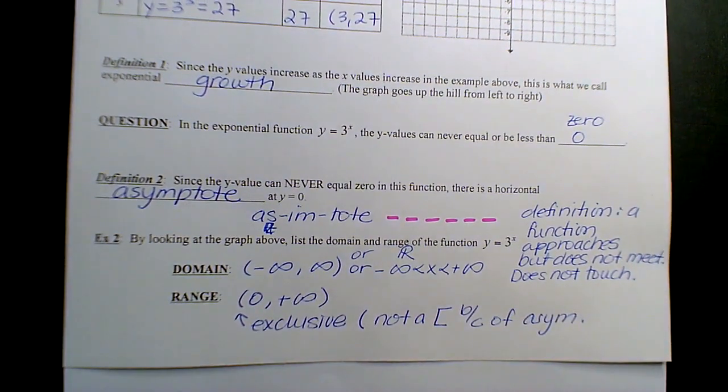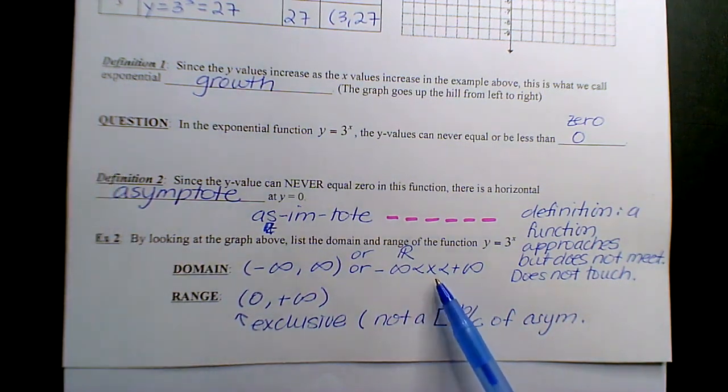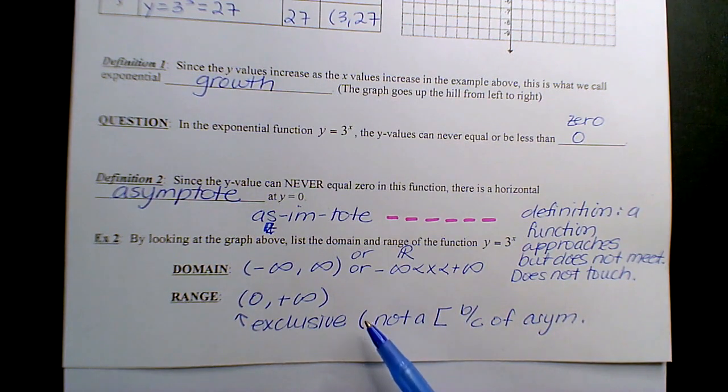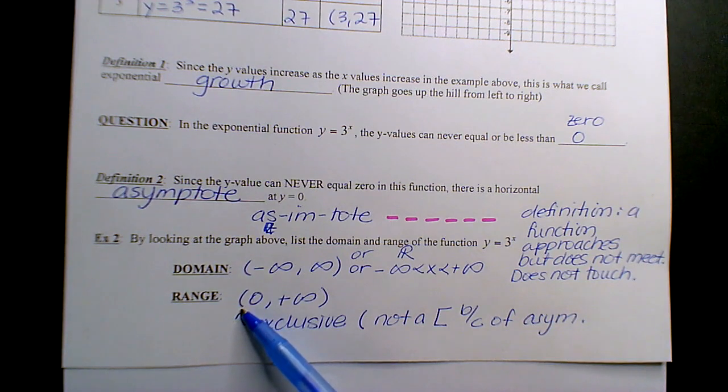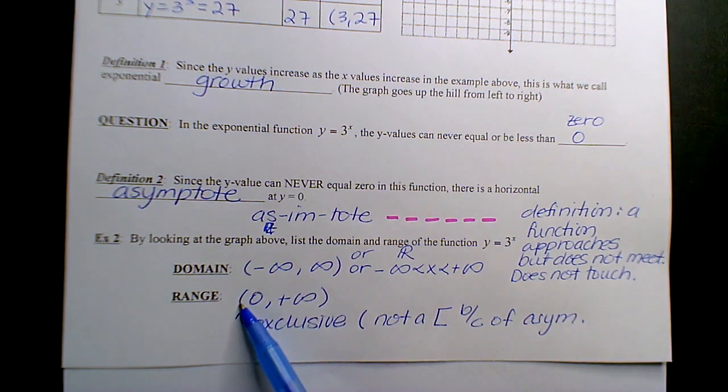So the domain is negative infinity to infinity, all reals, however you want to write it. The range is zero to positive infinity. This is a parenthesis, not a bracket, because of the asymptote. It's exclusive on zero - it's never going to hit zero, so that's why it's a parenthesis.